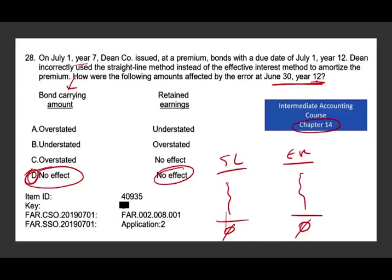Notice it's by Year 12 — it doesn't matter. Let's say the premium was $3,000; by Year 12, the premium is down to zero regardless of method. In individual years there will be differences — Year 1, Year 2, Year 3, Year 4 — but by Year 5 they cancel each other out. The differences offset each other, so the net effect over the full life of the bond is zero.